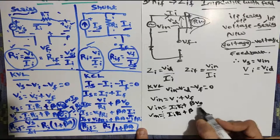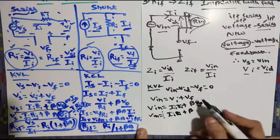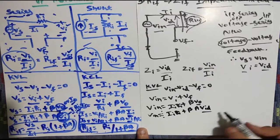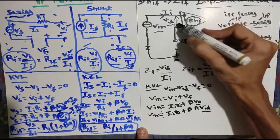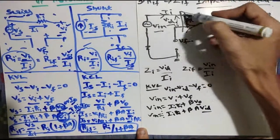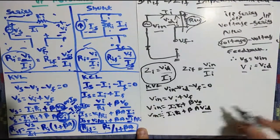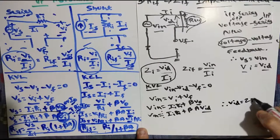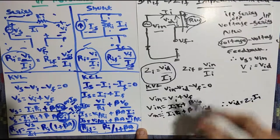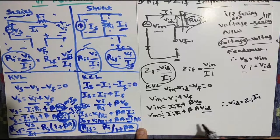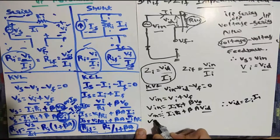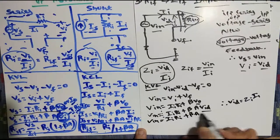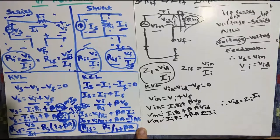Beta remains as-is, and V_naught is taken in the format A times VID. Now VID can be written as ZI times VI using the formula where VID equals ZI into VI. Applying that here, you will get Vin is equal to IIRI plus beta times A times ZI times II.